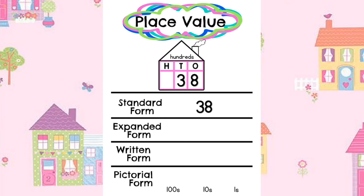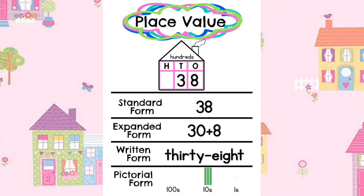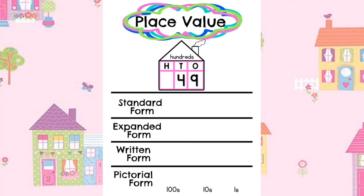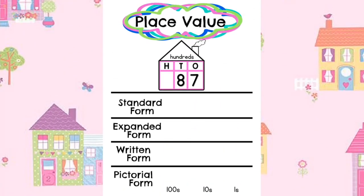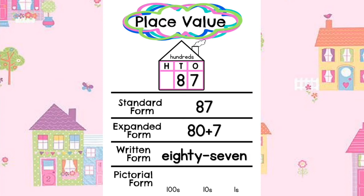Here is the number 38 in written form. And in pictorial form we draw the number with 3 tens and 8 ones. Here is the number 49 in standard form. Here is the number 49 in written form. And in pictorial form we draw 4 tens and 9 ones. Here is the number 87 in written form. And in pictorial form we draw 8 tens and 7 ones.